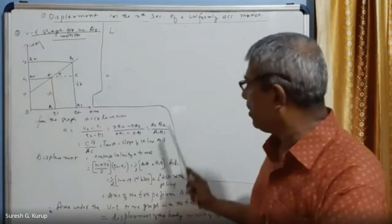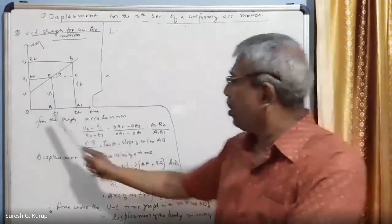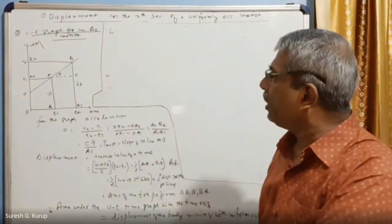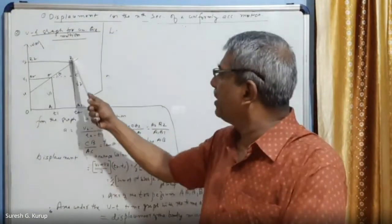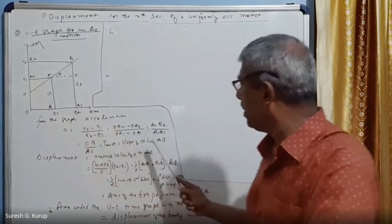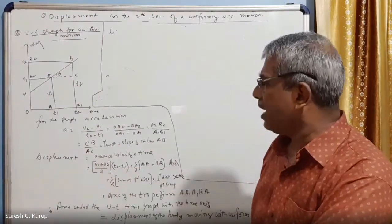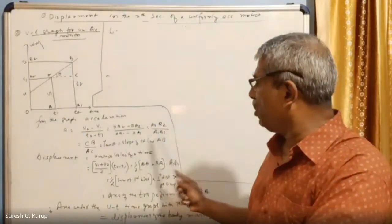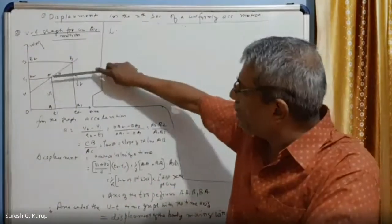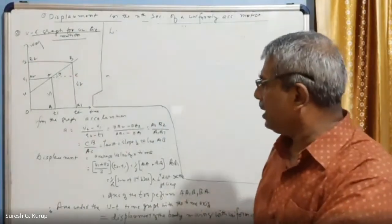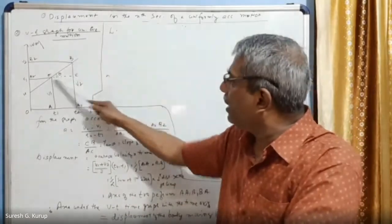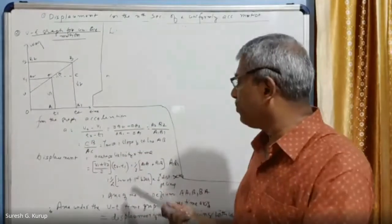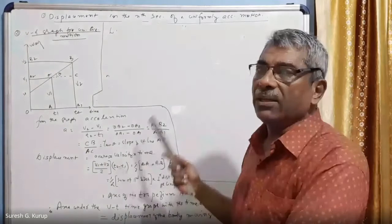OB2 minus OA2 equals A2B2, and OB1 minus OA1 equals A1B1. Now A2B2 equals BC, so the acceleration equals CB/AC. In the right triangle formed, CB/AC is the perpendicular over the base — which is the tangent, and that is the slope of the straight line. So we have proved that the slope of the velocity-time graph equals acceleration.